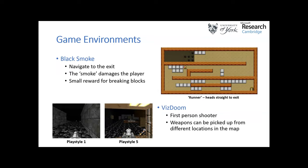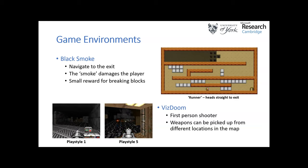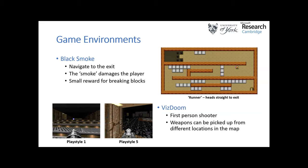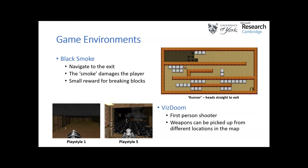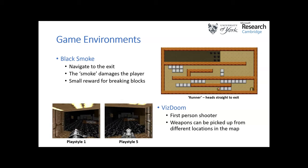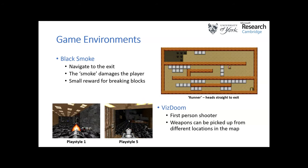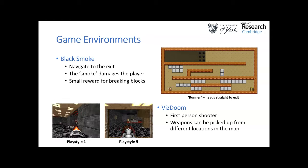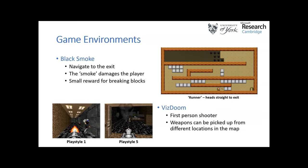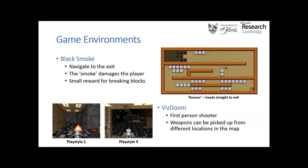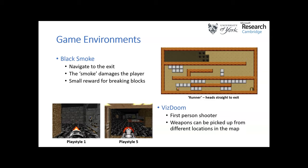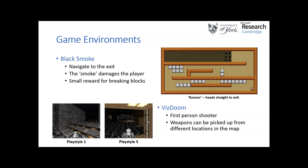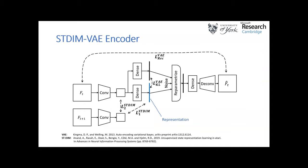In order to test our methods we had to choose game environments and generate some gameplays for each. Our first game was Black Smoke, and based on previous literature we designed two playstyles: a runner that headed for the exit as quickly as possible, and a completionist who looked to break boxes and collect them on the route. The second environment was VisDoom, a first-person shooter, where we defined playstyles based on weapon choice and player movement within the map.